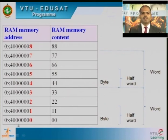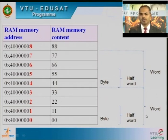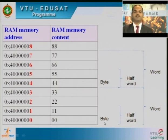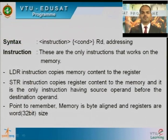The memory location 0x40000000 holds one byte (0x00). Combining two bytes — 0x00 and 0x11 — makes a half word. Combining four bytes — 0x00, 0x11, 0x22, 0x33 — makes a word. A word is 32 bits, a half word is 16 bits, and a byte is 8 bits. With this understanding, we now look at the instruction syntax for load and store instructions.